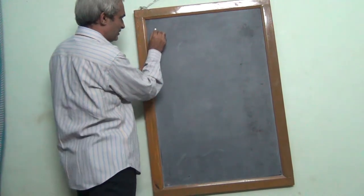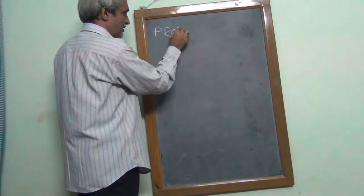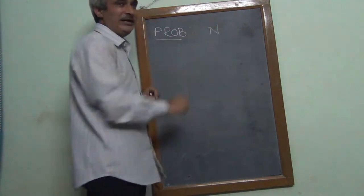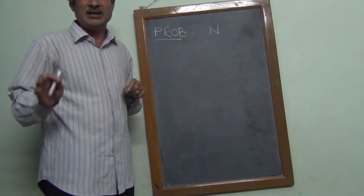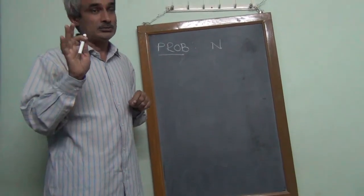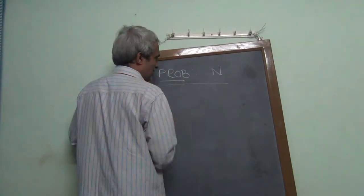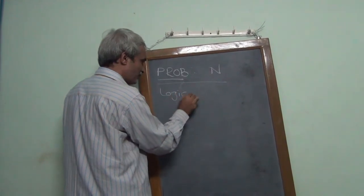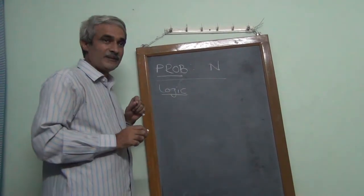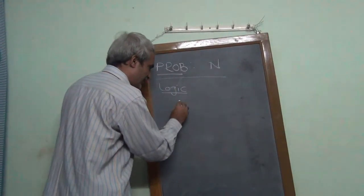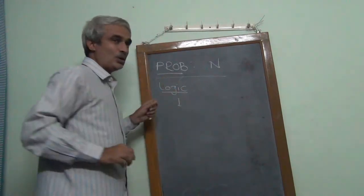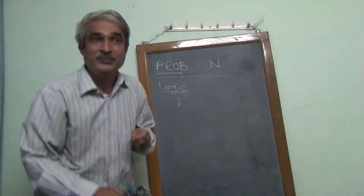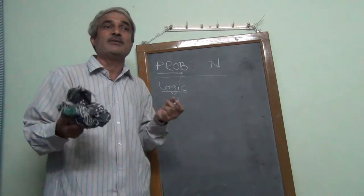Today's problem definition: given a number N, we need to find out whether it is even or odd. As part of the second exercise, I will write the logic in the form of an algorithm only. In yesterday's exercise, we worked out an example and that was the logic. Today we try to express the same logic directly in the form of an algorithm.